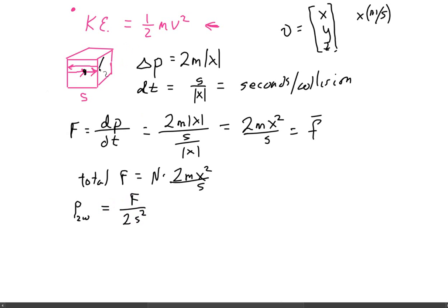Because it is this wall, and it's the opposite wall in the X direction. So there's two of those walls, and that's the area. And so force is 2NMX squared over S over 2S squared. That's equal to NMX squared over S cubed.